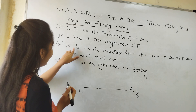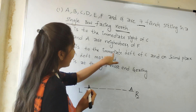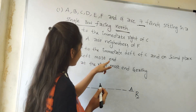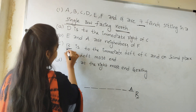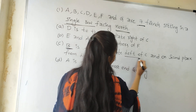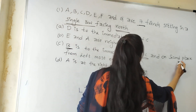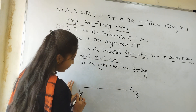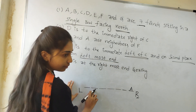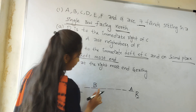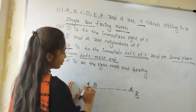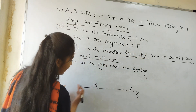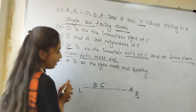Next, B is to the immediate left of C and on second place from the leftmost end. This is the leftmost end, and this is the second place. So B is placed on the left side at second place, and B is to the left of C. So this is C.